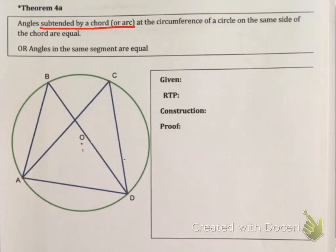Now what does Theorem 4a say? Theorem 4a says if you have angles which are subtended by a chord or an arc—if you have arc AD or chord AD—if these subtend angles at the circumference of the circle on the same side of the chord, these angles are equal. If you look at chord AD, it subtends angle B at the circumference and also subtends angle C at the circumference. This theorem says that angle B and angle C will be equal. Another way to say this is angles in the same segment are equal.